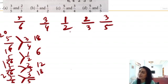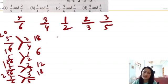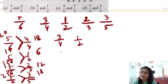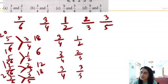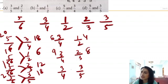Now among the remaining four fractions, we need to find the second largest. I am comparing 3/4 with the remaining ones. Compare 3/4 and 2/3 by cross multiplication: 3×3 = 9 and 4×2 = 8. Then compare 3/4 and 3/5: 4×3 = 12 and 5×3 = 15.